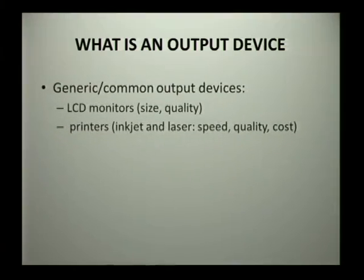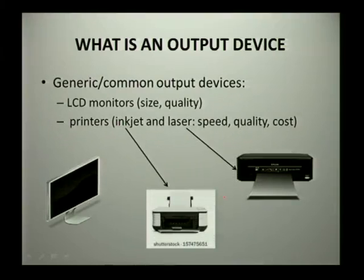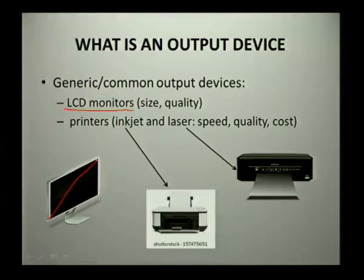Now let's look at the devices used to produce those types of output. The most common ones are your screen and your printer. For screens, we normally use LCD monitors nowadays. In the olden days we used CRT monitors. What is important is the size of the screen, which is measured diagonally from bottom to top, as well as the quality of the image. LCD monitors produce better image quality compared to CRT monitors.